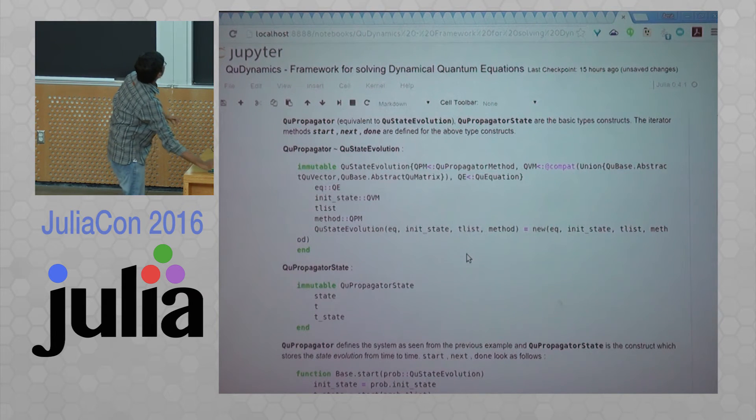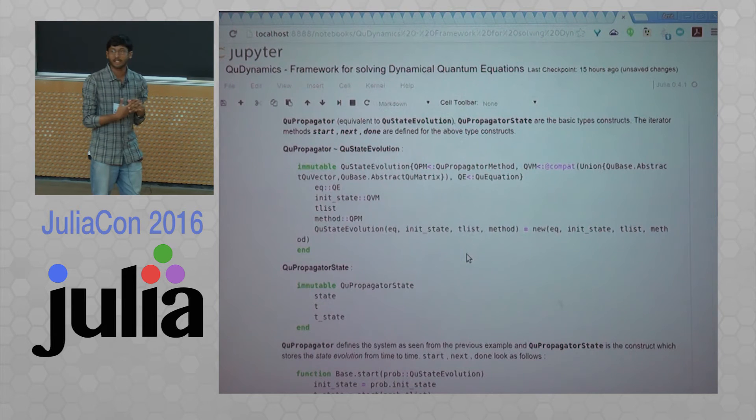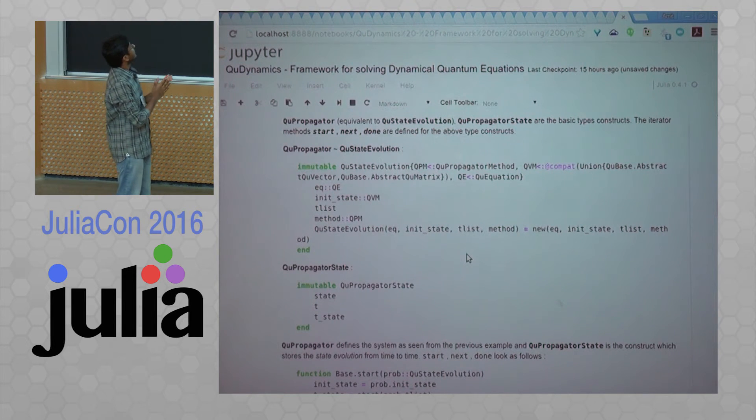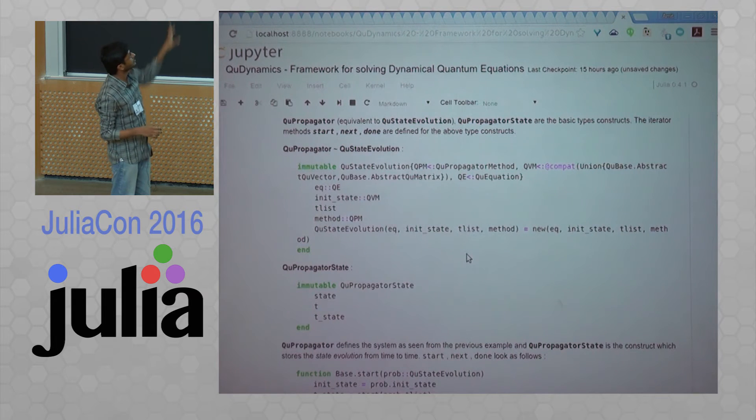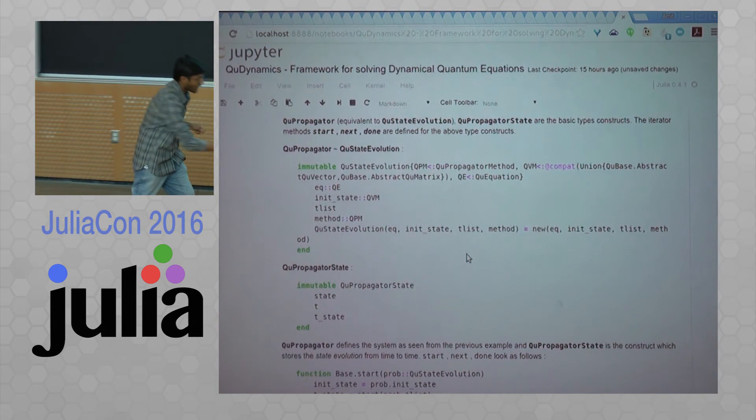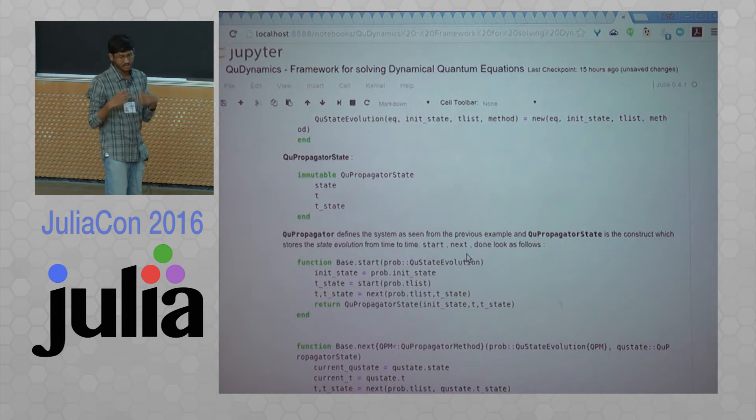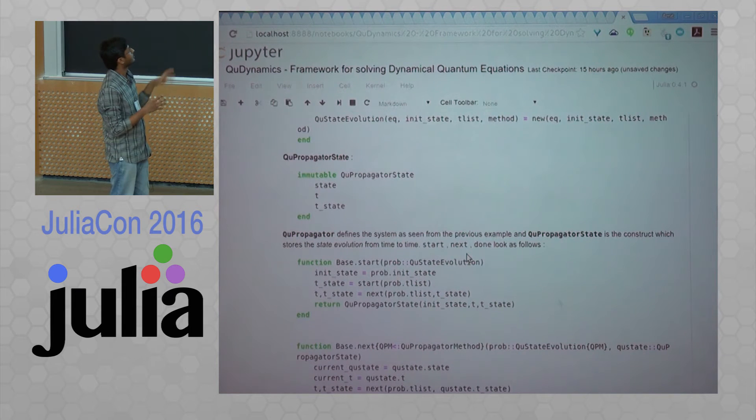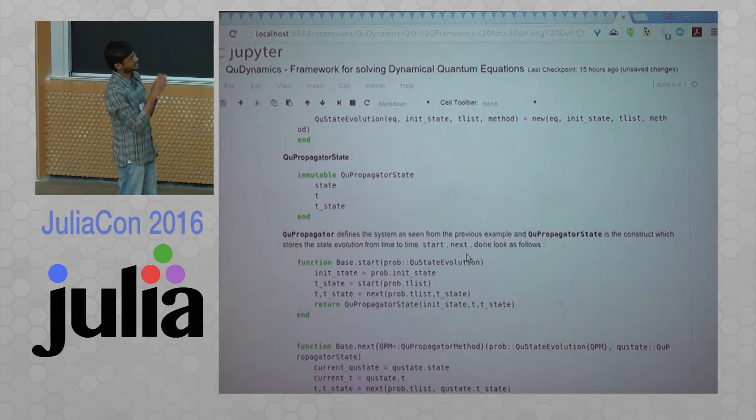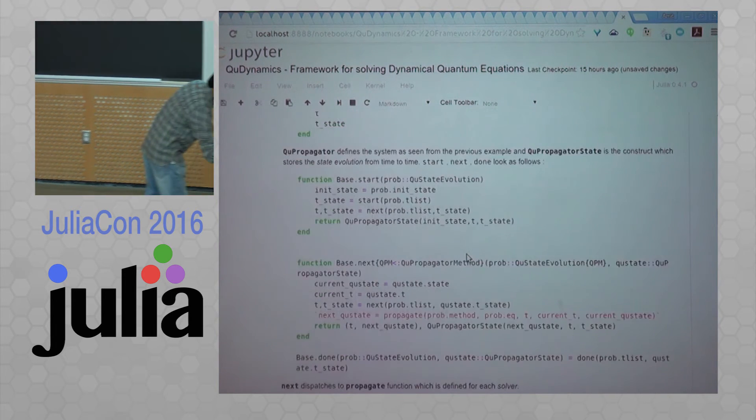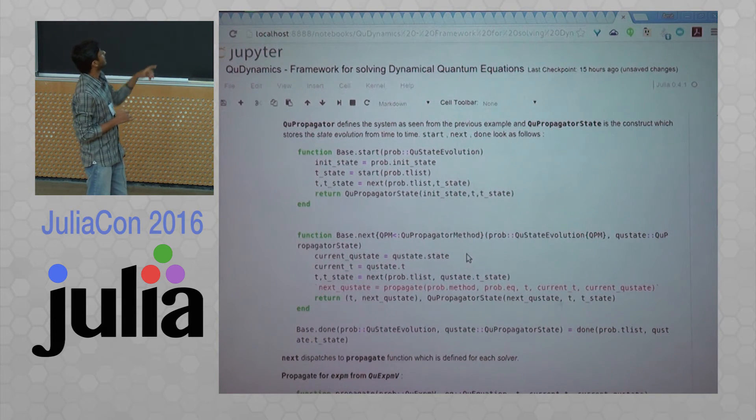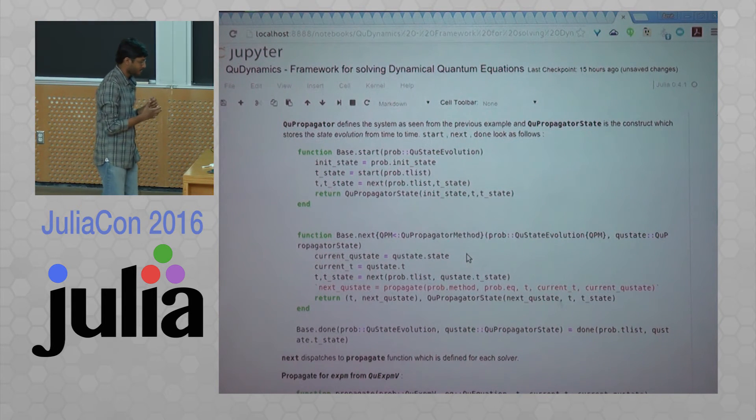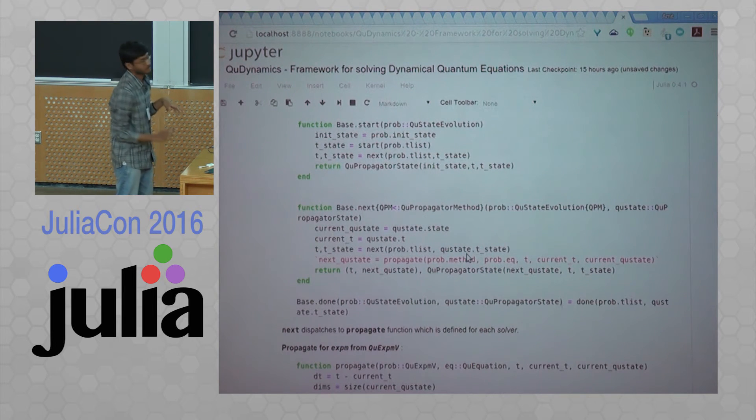So looking at a bit of the design, there are mainly two constructs: one is the Qpropagator and the Qpropagator state constructs. Qpropagator is going to take in the system information here. We have an equation, its state, tlist, and method. This is the basic construct that we have to give in, and the system is defined through this type construct. Qpropagator state stores in all the states. Once the states are evolving, Qpropagator state is the type that is going to create Qpropagator states for each of the time steps. We have used the iterator from the base. We have extended the iterators from the base for this kind of mechanism. We have created base.start, base.next, and base.done for the Qpropagator type, which is the system type.